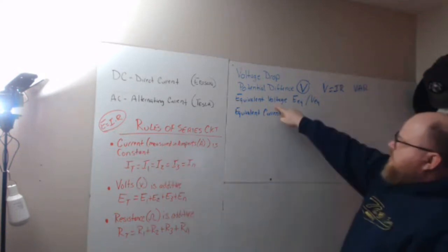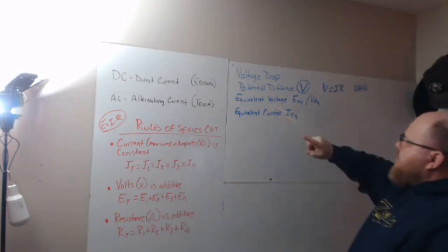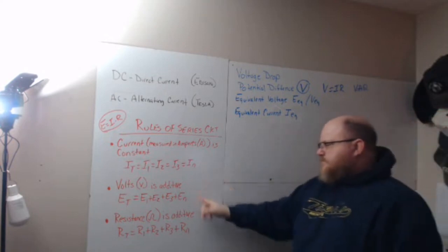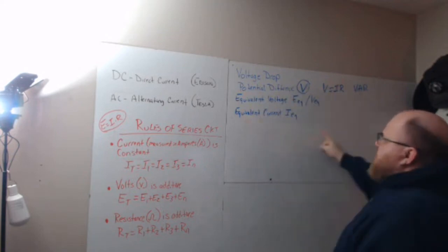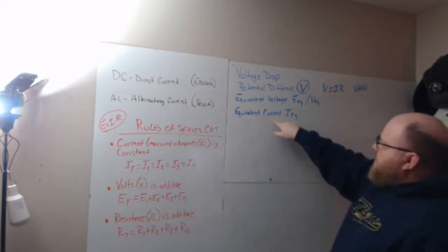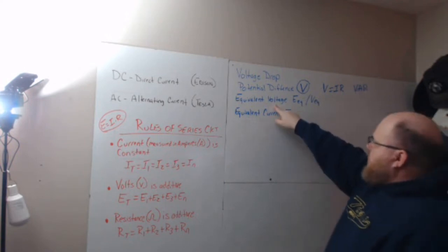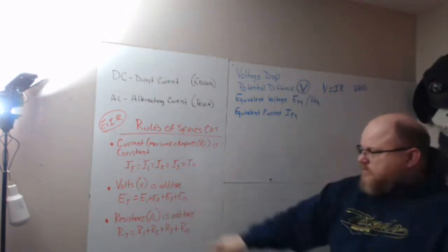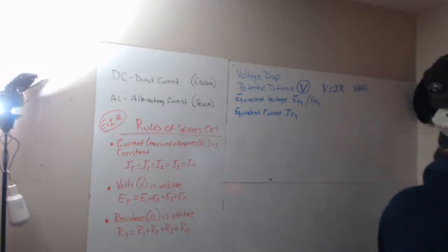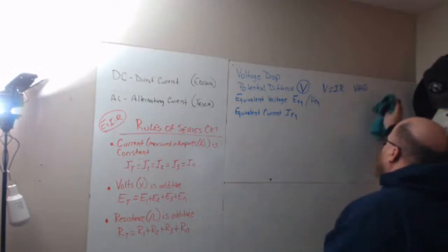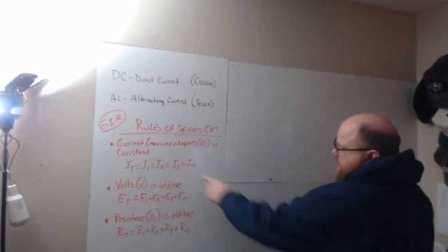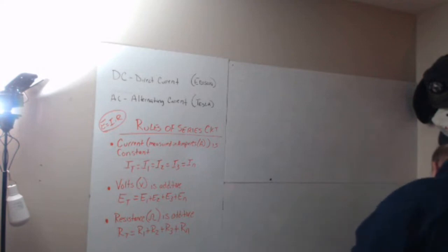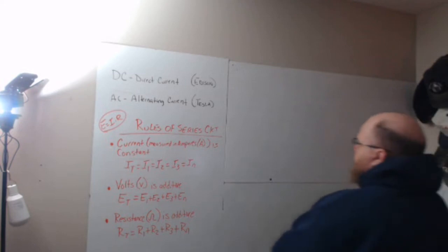Now, they'll also talk about equivalent voltages in some books and equivalent current. This covers that. So if you have a book that has these in it, if you go through and use these rules to find equivalent current and equivalent voltage and voltage drop, you'll be able to do it. It's just different ways of talking about the same thing. Only thing I'm concerned about you knowing are the rules of a series circuit. So I'm going to draw a series circuit up here and we'll do the analysis of it.